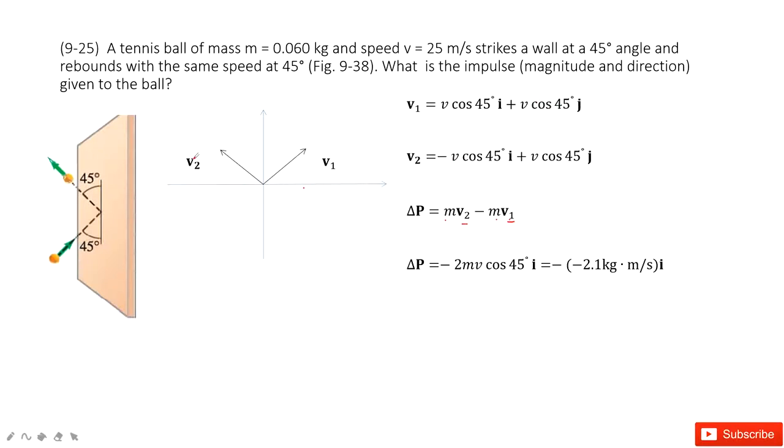And then V2 is negative V cosine 45, because it is projected to the x-component with a negative sign. Negative V cosine 45. And this one is cosine 45.